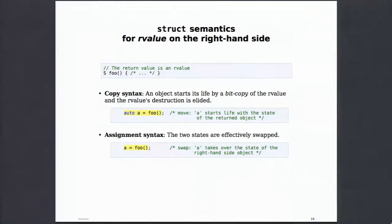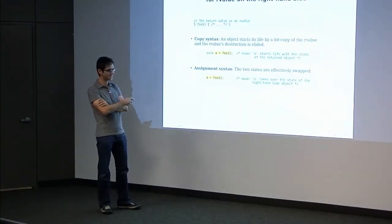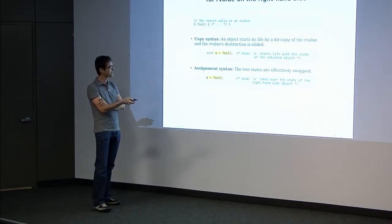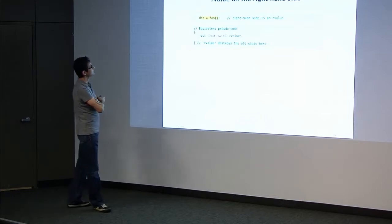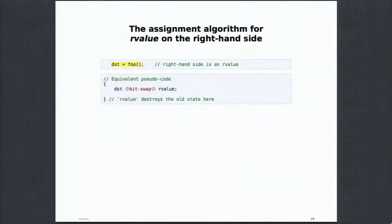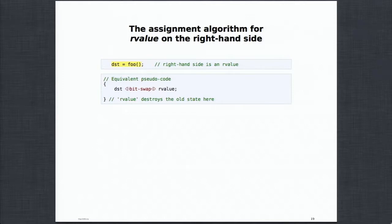Just to reiterate, when you have an R value on the right-hand side in an assignment, it's effectively a bit swap. The R value's destructor will destroy the old state of the destination when the context is left. Walter, please correct me if I'm making mistakes — it's awesome to have all these experts here. I can say anything and someone will correct me.